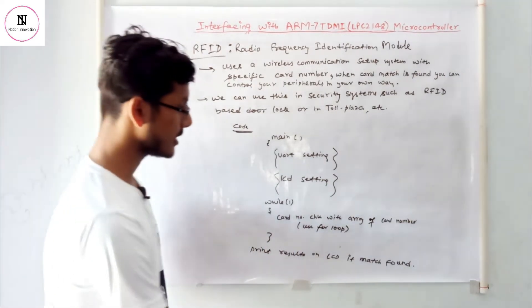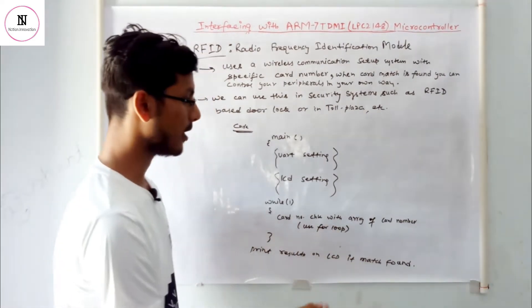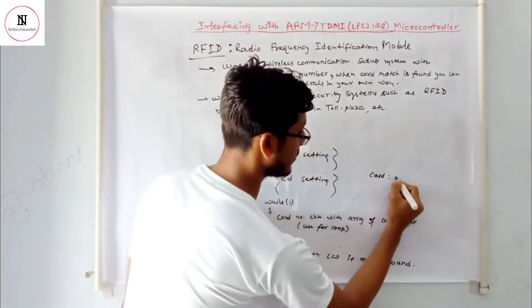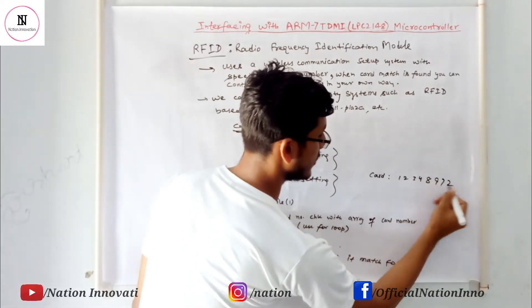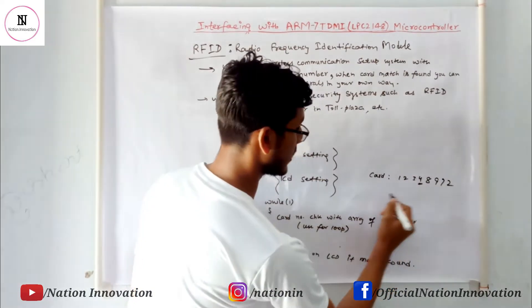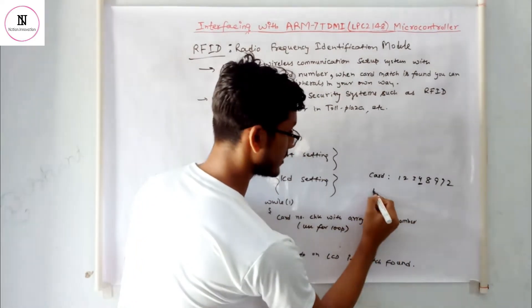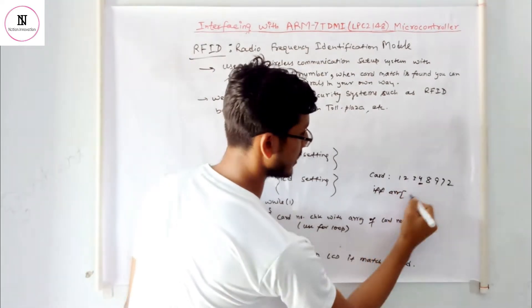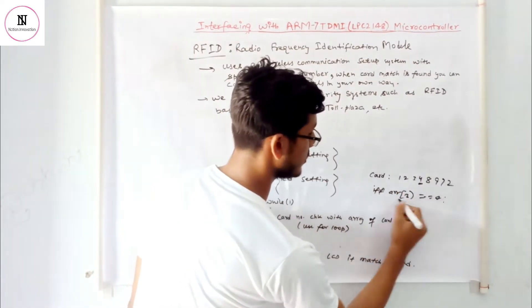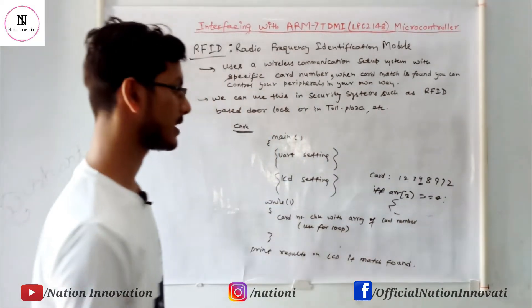we check the conditions of the card number to see if it's found or not. For example, if the card number is 1-2-3-4-8-9-7-2 and the fourth bit is 4, we check the condition. If array[3] equals 4, then we execute this type of statement.